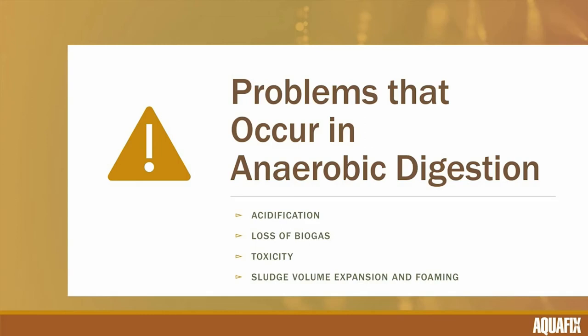Toxicity is something people bring up a lot but doesn't appear to happen that much in anaerobic digesters. There are some areas where it may be more likely, particularly in industrial systems. I've been concerned about peracetic acid being fed into anaerobic digestion in some cases because it's an oxidizer. Sometimes we'll see metal concentrations which are too high, especially at lower pH conditions, which can lead to a persistent upset.